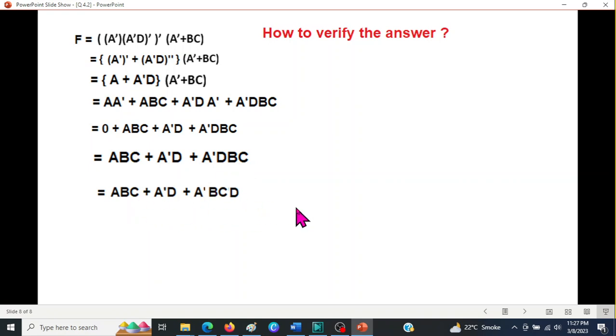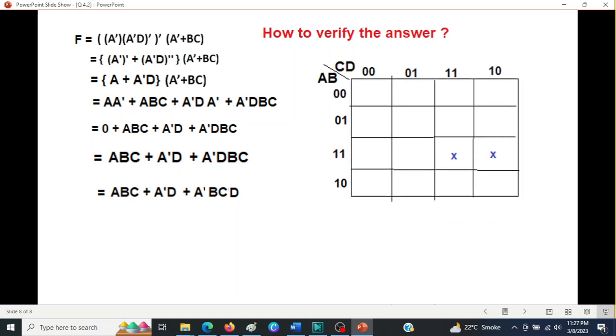And now I will plot this in the K-map. K-map is the best way of simplifying circuits. So K-map of 4 variables. I plot AB and CD. I hope you know how to use K-map.